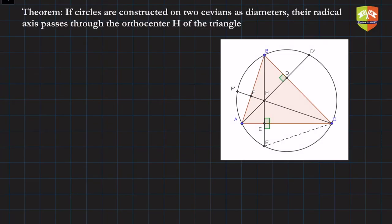Hello and welcome to another session on Gems of Geometry. Furthering our pursuit of important concepts, we are going to discuss another theorem. This theorem states that if circles are constructed on two cevians as diameters, their radical axis passes through the orthocentre H of the triangle.